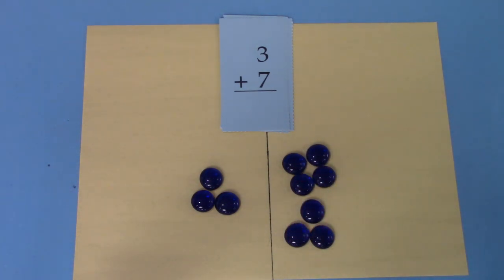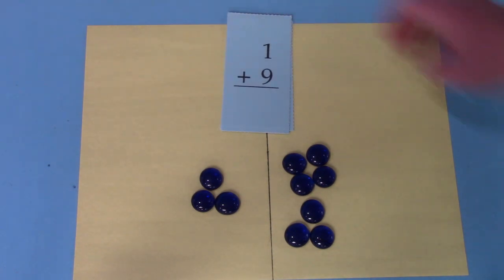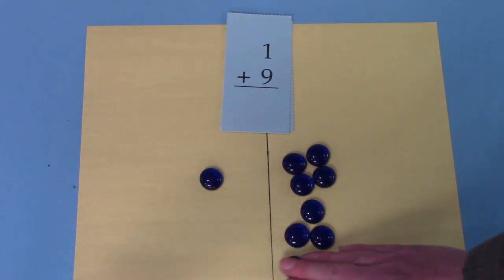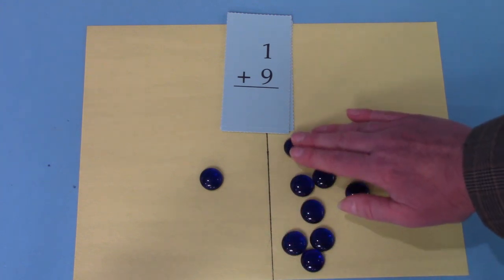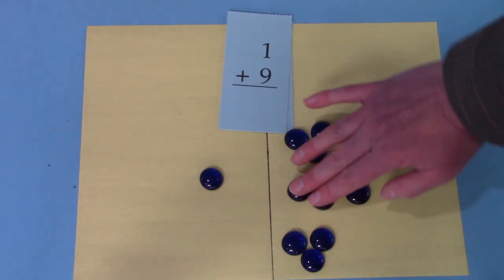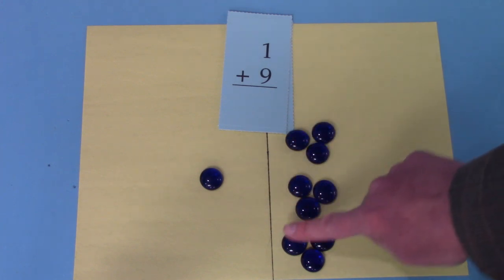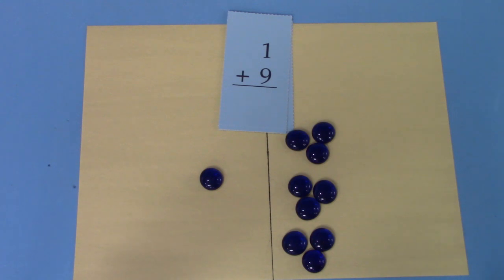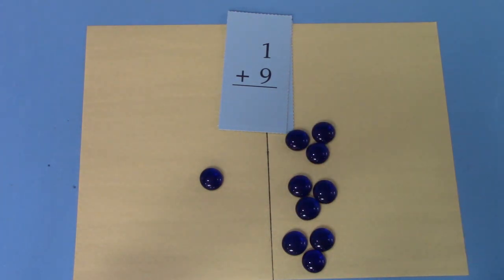We only have a few facts left. Let's look at this one. One plus nine. I'll leave one on this side and make three little groups of three to be our nine. One, two, three, four, five, six, seven, eight, nine. Three groups of three make nine. Nine and one is ten.